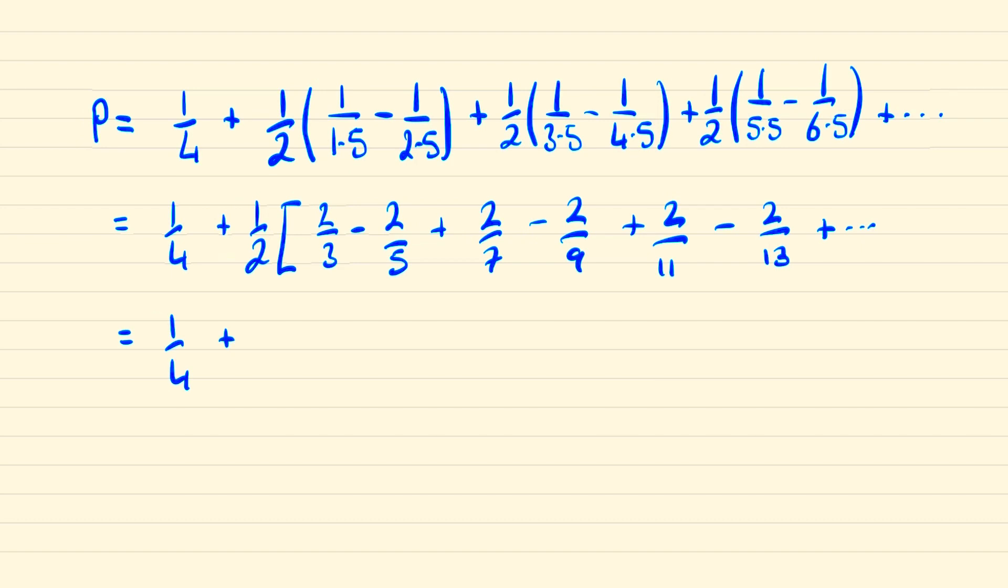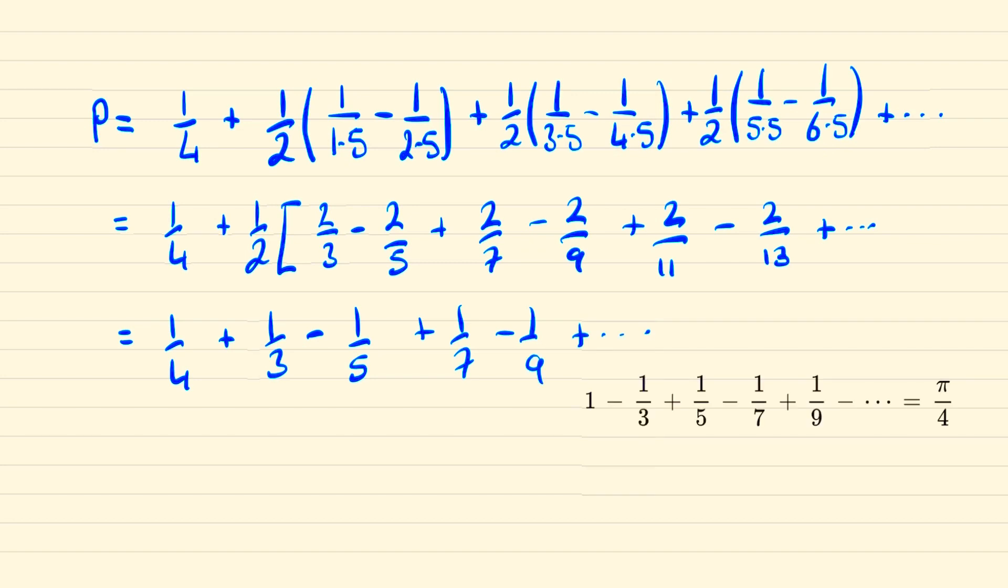At this stage we can use our Leibniz formula because we can realize that this part of our series is equal to 1 - π/4. And therefore 1/4 plus that becomes 5/4 - π/4, and so this is our probability which is about 0.466.